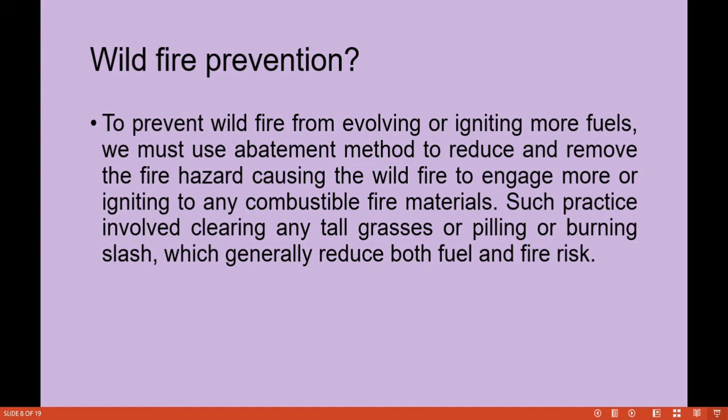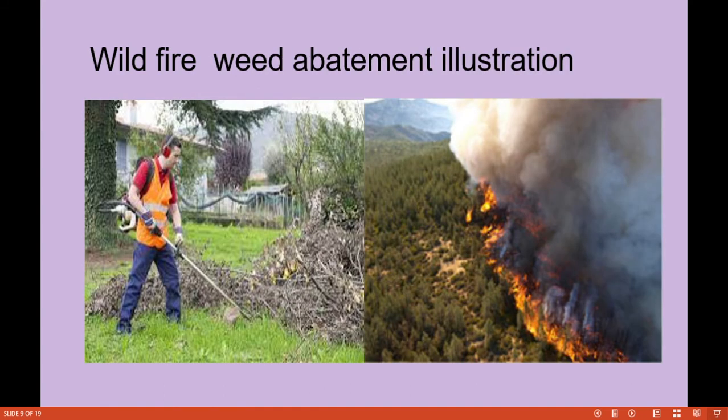Such practice involves clearing — extinguishing fuels near our surroundings such as tall grasses — or peeling or burning slash, where you burn bushes in your area, which generally reduces both fuel and fire risk. These are examples of wildfire abatement, where a person is clearing the surrounding area using an instrument that cuts the bushes, generally reducing both fuel and fire risk.